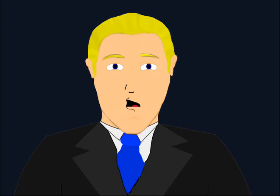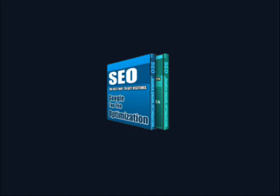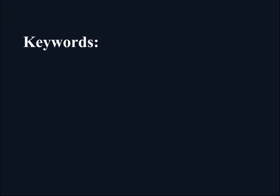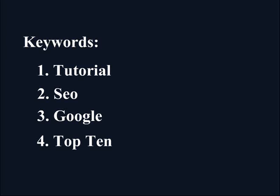Here's an example of everything we've mentioned so far. Let's say I want to sell a tutorial on SEO that focuses on Google, and this tutorial promises to get you into a top 10 listing. So here are my keywords: tutorial, SEO, Google, and top 10. But after going to WordTracker.com, I find that the keyword optimization is searched more often than the word SEO. Based on those statistics, I drop the word SEO from the list and replace it with the word optimization.